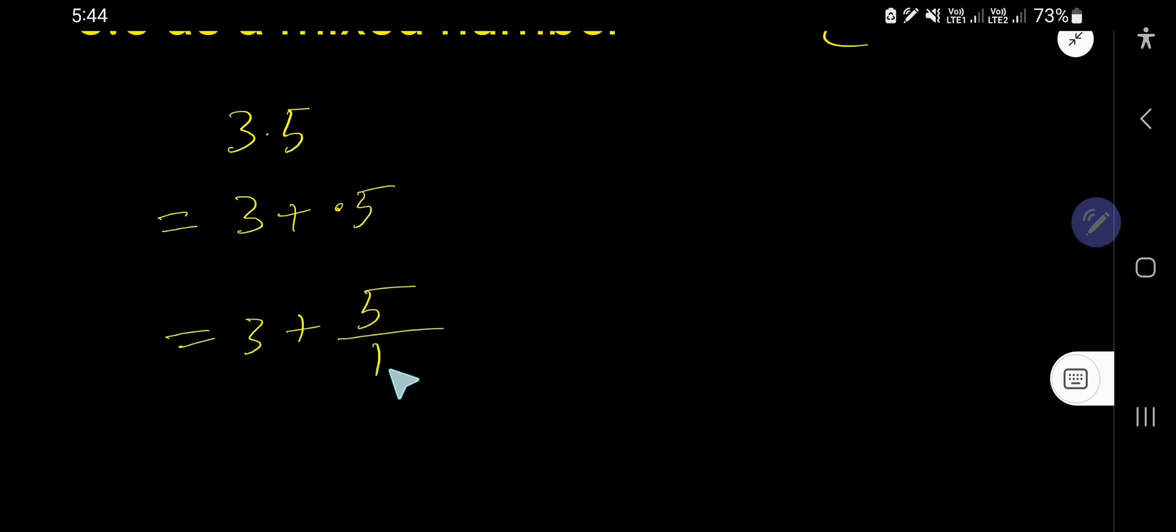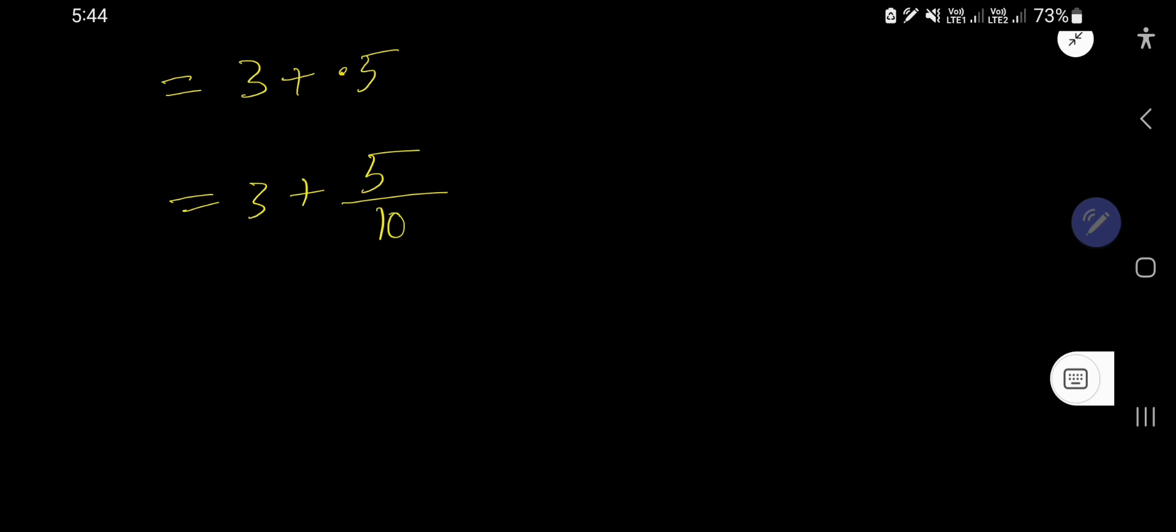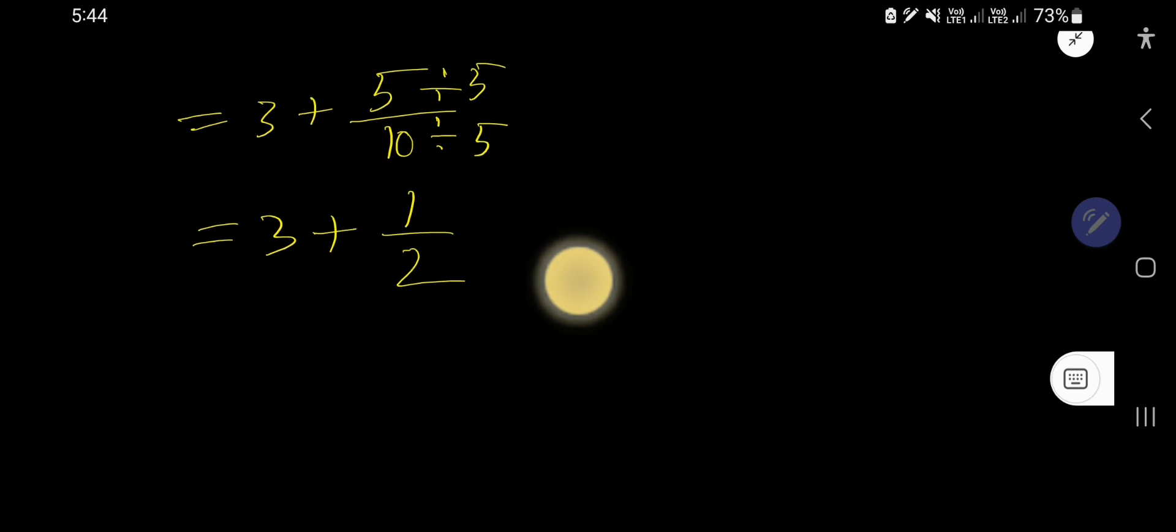Then you have to write 10. Now you need to reduce this part, so how to do that? Just divide the numerator by 5 and divide the denominator by 5. So we are getting here 1 over 2.